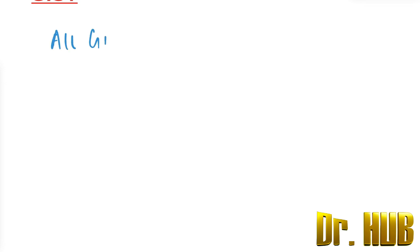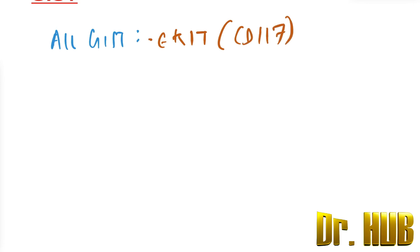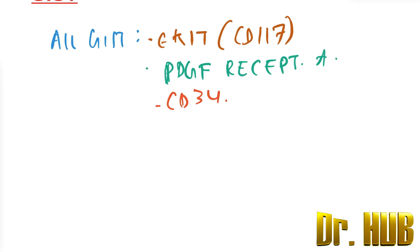Almost all GISTs express CKIT, also known as CD117. They also express the PDGF receptor A as well as CD34.